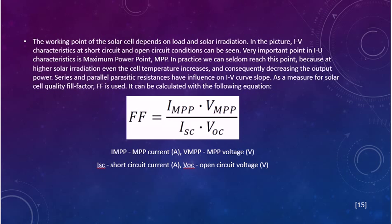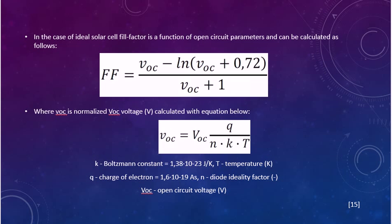In the case of an ideal solar cell, fill factor FF is a function of open circuit parameters and can be calculated as follows, where VOC is the normalized open circuit voltage calculated with the equation below.